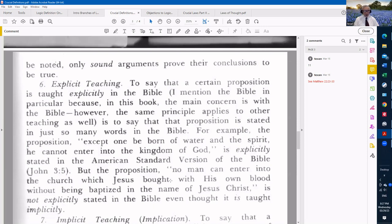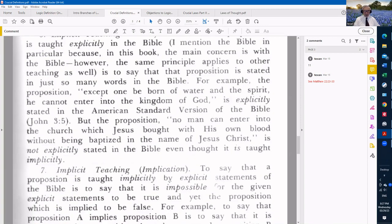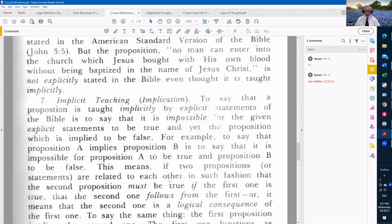And to say that a certain proposition is taught explicitly in the Bible, is to say that the proposition is stated in just so many words in the Bible. For example, the proposition, except one be born of water and the spirit, he cannot enter into the kingdom of God, is explicitly stated in the ASV that Brother Warren uses. But the proposition, no man can enter into the church which Jesus bought with his own blood without being baptized in the name of Jesus Christ, is not explicitly stated in the Bible, even though it is taught implicitly. So to say that a proposition is taught implicitly by explicit statements of the Bible is to say that it is impossible for the given explicit statements to be true, and yet the proposition which is implied be false. It can't be that way.